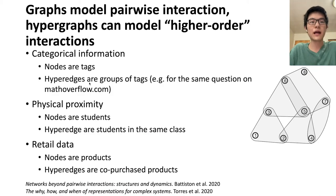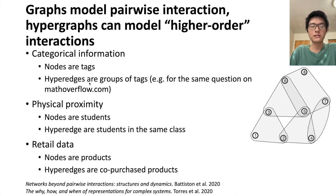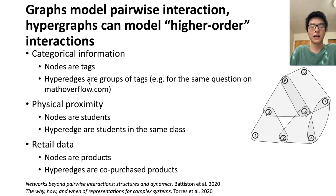Now let's go back to hypergraphs. A graph can only model pairwise interactions, while a hypergraph can model high-order interactions. In the real world, there are a lot of datasets that can be modeled better by hypergraphs. For example, for social websites like Stack Overflow, you can think of nodes as tags and hyperedges as groups of tags — if the same question can have multiple tags, you can put those tags in a hyperedge. For online retail data sites, you can think of nodes as products and hyperedges as products that are purchased together.